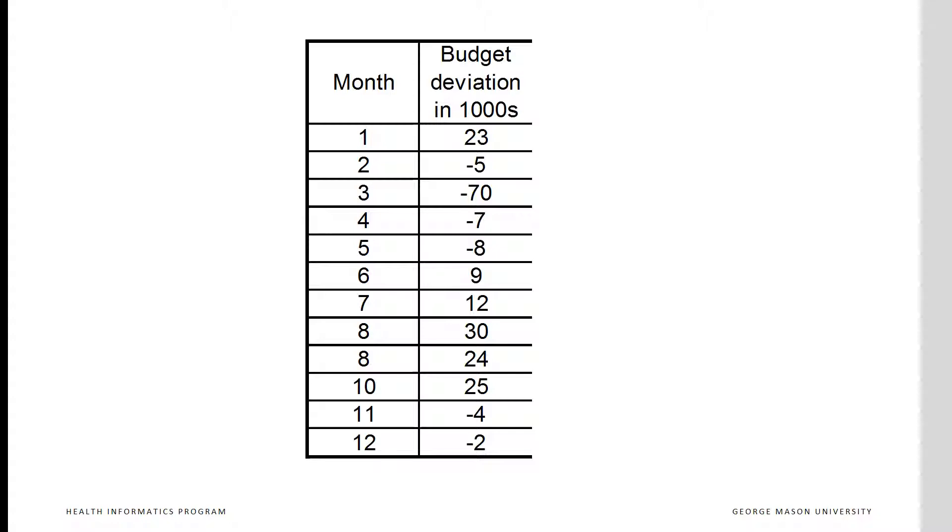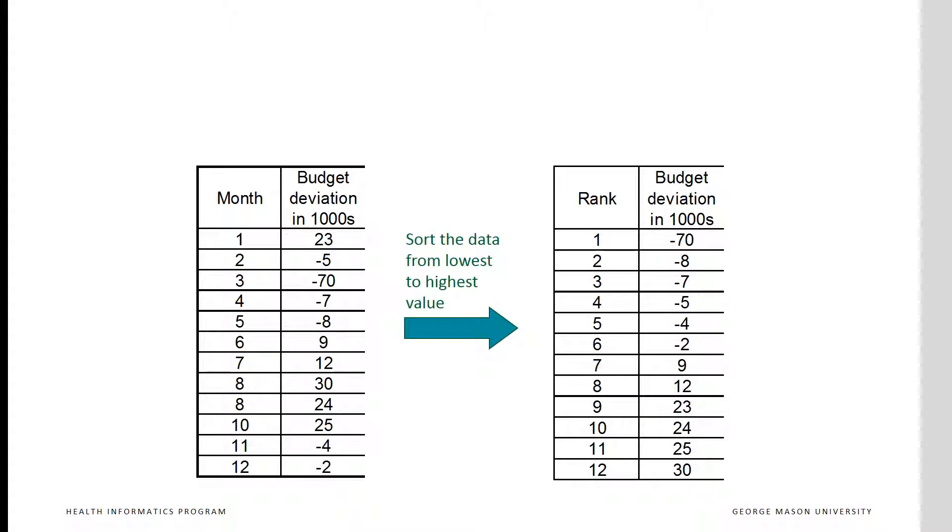Let us look at another example. Suppose that we are looking at 12 months data regarding our clinic's budget. The question is whether the expenditures in any particular month are higher than the general pattern across the 12 months. There is no pre or post intervention period here. The table shows the budget deviations, expenditures minus budget amount, for each of the months in thousands of dollars. First, we sort the data.